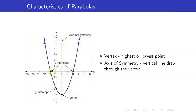Our x-intercepts are the points on the x-axis where the graph intersects it, and the y-intercept is the point on the y-axis where the graph intersects it.